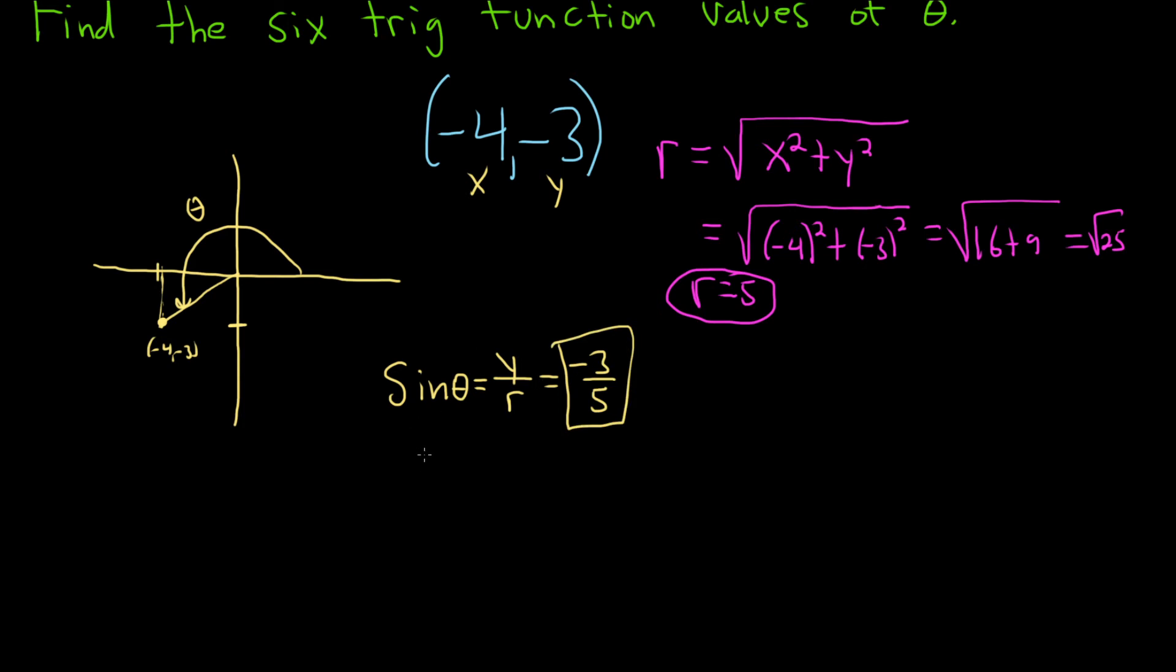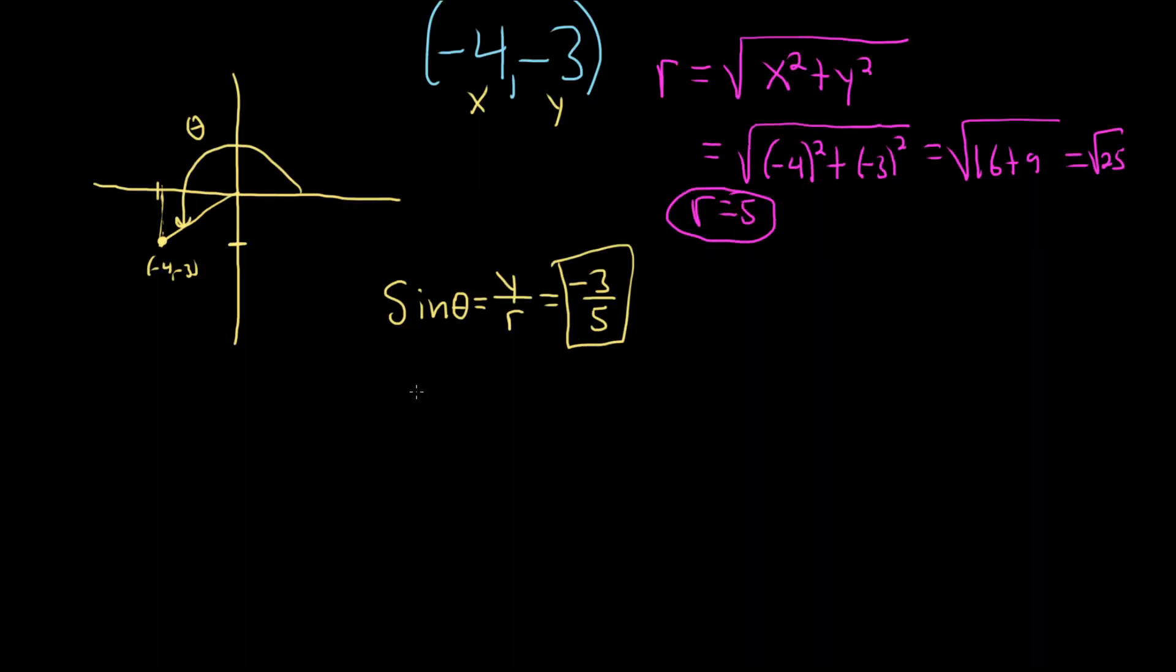The cosine of theta is given by the formula x over r. And in this case, x is negative 4. So this will be negative 4 over 5. That's another answer to our question.